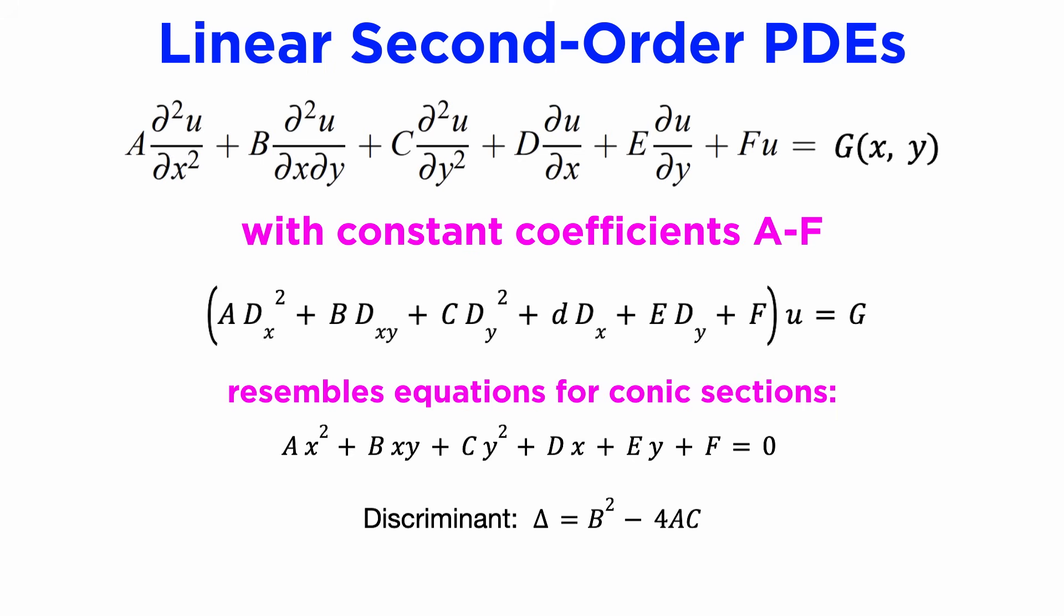The discriminant of a PDE is defined as the value of b squared minus 4ac, the same form as for a quadratic equation or conic section. If the discriminant is negative,